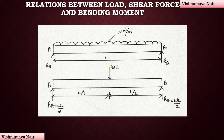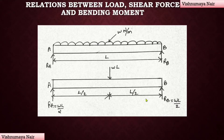Now due to this load acting on the beam, we will have reactions at A and B. Let RA be the reaction due to the hinge support at end A and RB be the reaction due to the roller support at end B. RA and RB will each be equal to WL/2 in order to resist the externally applied load.